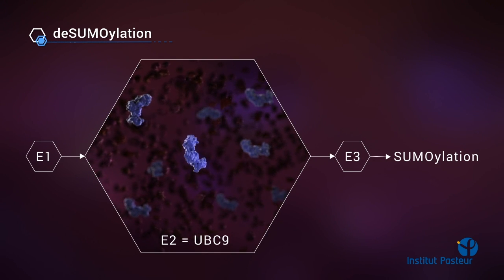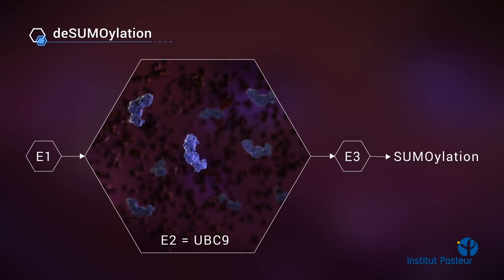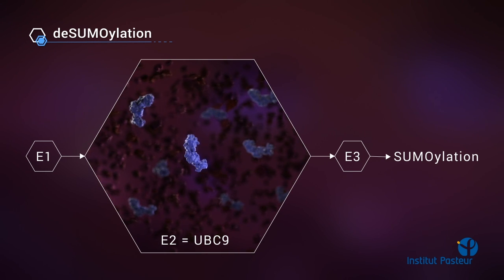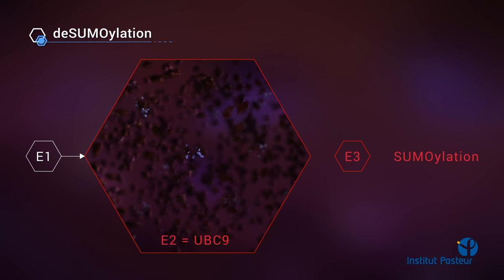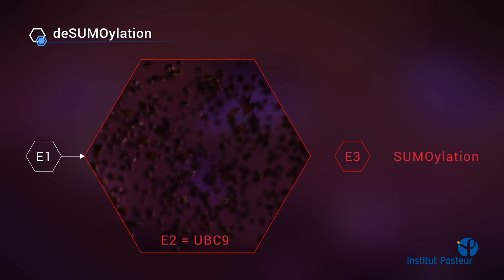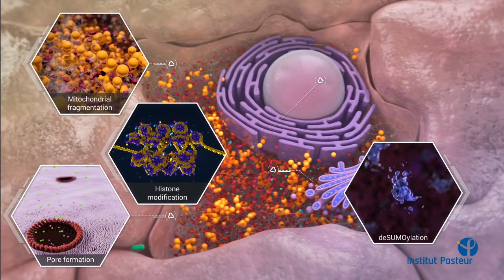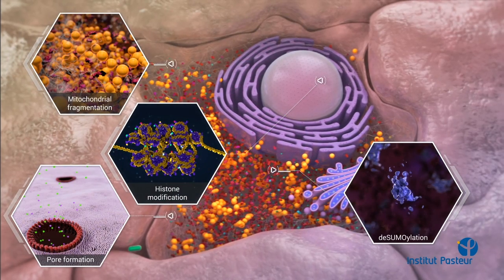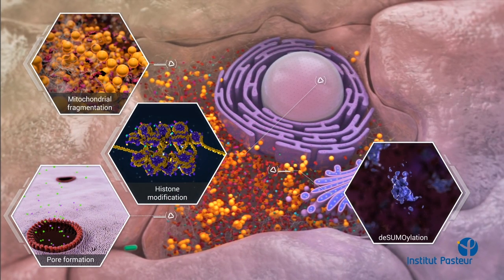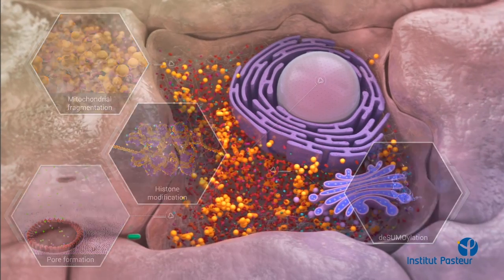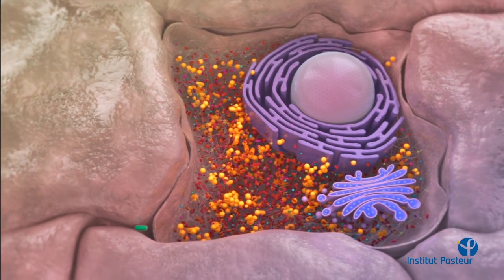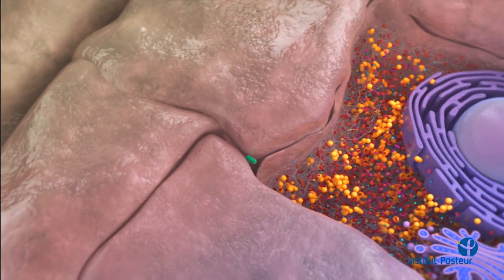UBC9, a critical enzyme of this pathway, is degraded in response to LLO, leading to an impairment of host sumoylation and an alteration of several host protein activities, including transcription factors. By all these processes, the bacterium can modulate host cell functions before its entry.